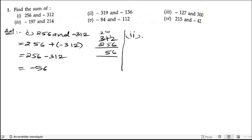Second bit is minus 319 and minus 136. So minus 319 plus minus 136, minus 319 plus into minus is minus 136. Since both are negative, we will keep the sign of minus, then we will add.